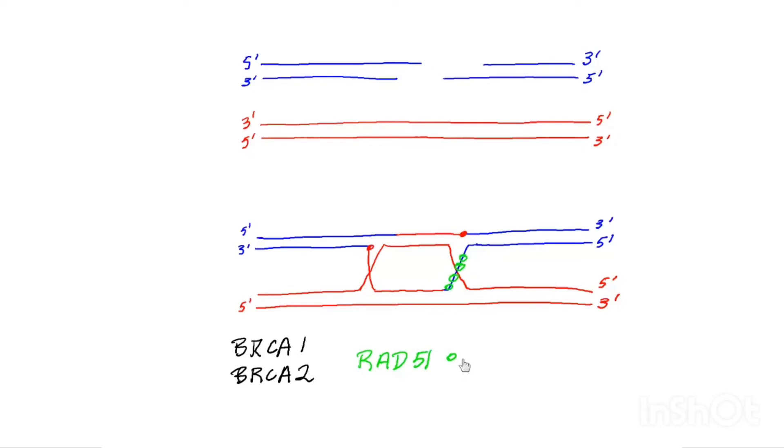Here's the molecule, a little circle. And these RAD51 molecules basically facilitate the formation of the D loop.